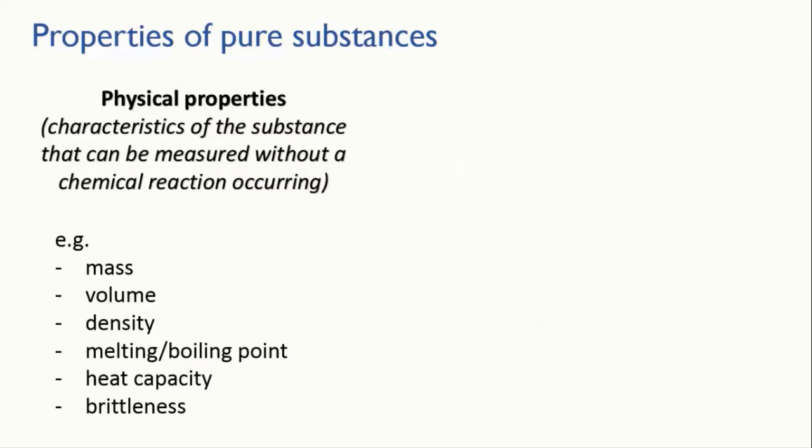Now, it turns out that we can classify the physical properties further. How we make this classification depends on the amount of material that we have. Pause the video and see if you can work out what the classification is and how the properties that I've got listed here might be divided up. Did you figure it out? Physical properties can be further classified depending on whether they are affected by how much of the material there is.